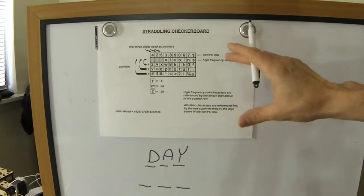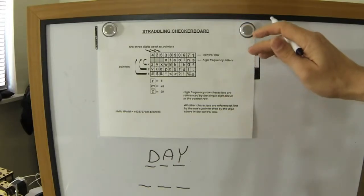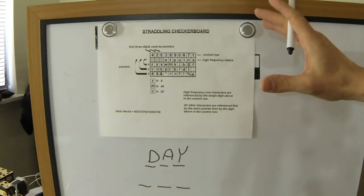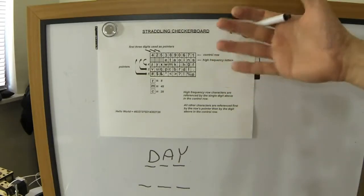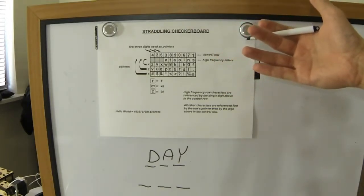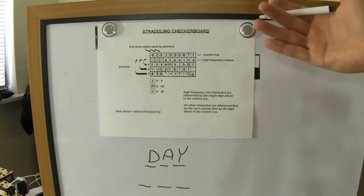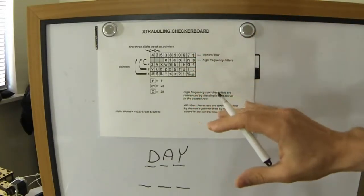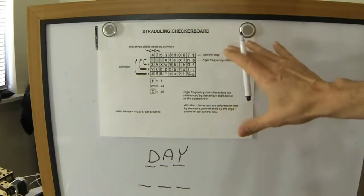Because, for instance, in the English language, the letter E occurs much more frequently than other letters. So even after a simple substitution to numbers, you can still see the pattern and distinguish which one of the numbers represents E. So this sort of flattens it out.